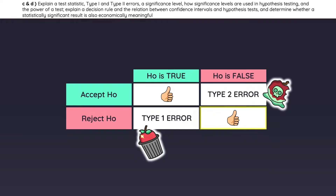The scenario where you correctly reject a false null is also known as the power of a test, and it is equal to 1 minus the probability of a type 2 error.